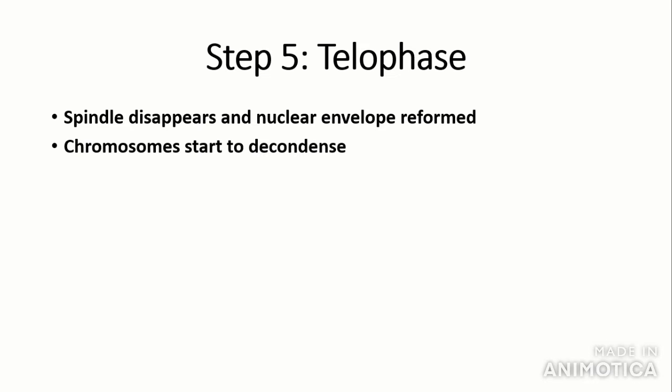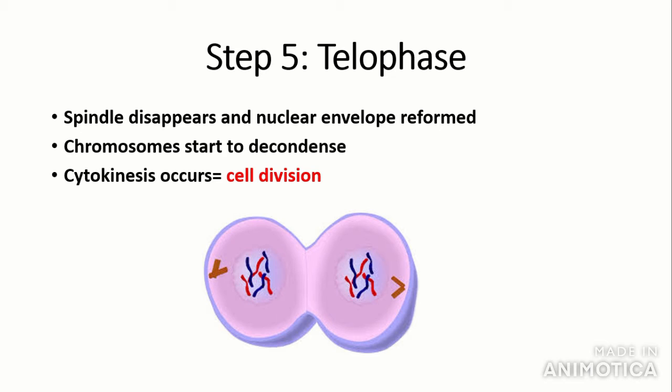The final stage is telophase. Telophase is when the spindle disappears as it is no longer needed and the nuclear envelopes are reformed. So you have two nuclei. Chromosomes start to decondense and then cytokinesis occurs, which is when the cell divides. So as you can see here, cytokinesis is occurring.